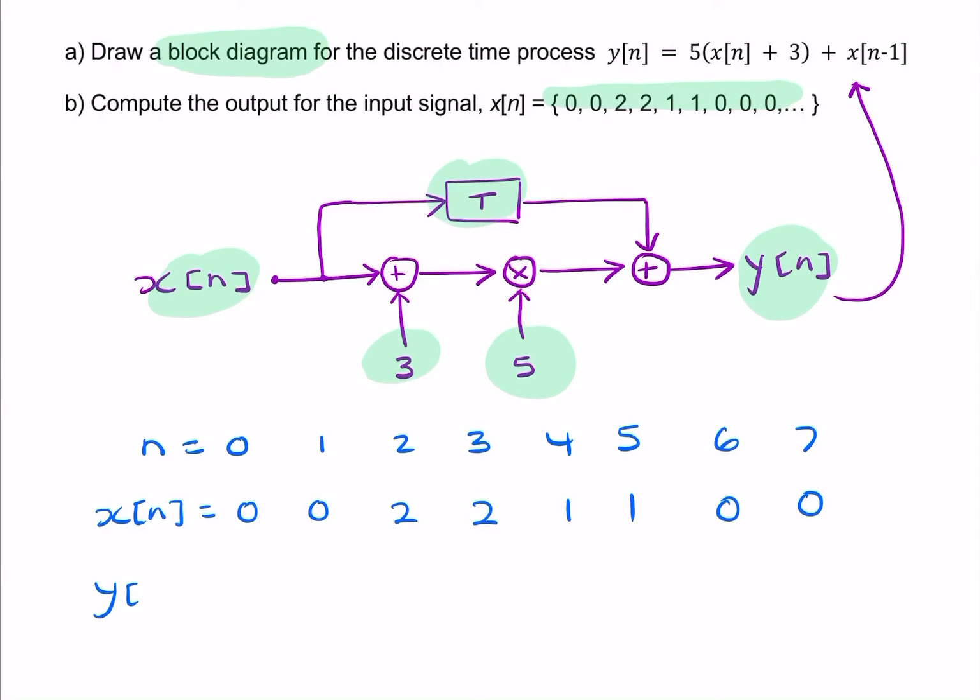So let's find y of n. If we assume the system is initially relaxed, then y of n for negative time is 0, and x of n for negative time is 0. So what's y of n? It's 5 times x of n plus 3. Well, x of n is 0, so 0 plus 3 is 3 multiplied by 5 is 15. But then we need to add the previous value of x. There is no previous value of x, it's a relaxed system. So the value of x of n minus 1, or x of minus 1, is just 0. So it's 5 times 0 plus 3, which is 15. So that's my first value for y.